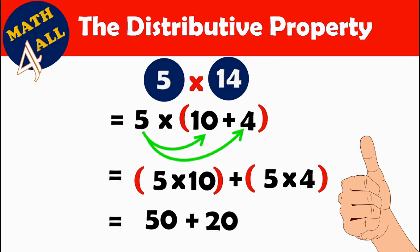Now you have to add 50 plus 20, which is 70. So 5 by 14 is 70. The distributive property makes it easier — when you break a large factor, it will be easier to multiply.